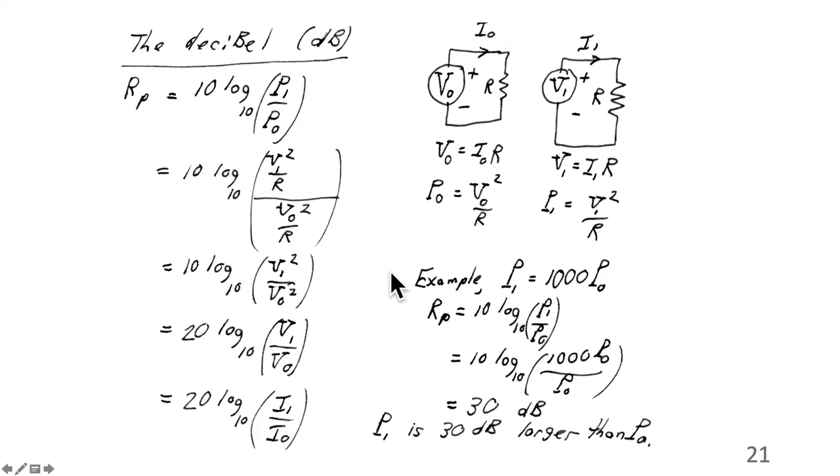An example I've given here is, suppose P1 were equal to 1000 P0. Then if we put that into this formula, P1 is 1000 P0. The P0's cancel, we're left with 10 log base 10 of 1000, which would be 30. And the units are dB. This is saying P1 is 30 dB larger than P0. When you start to work with extremes in numbers, very large and very small numbers, then the decibel compresses the dynamic range.